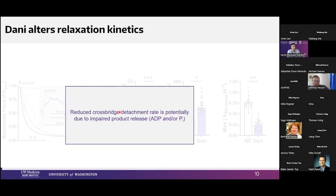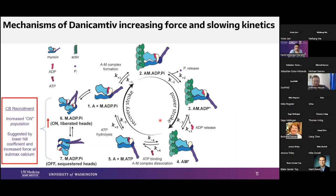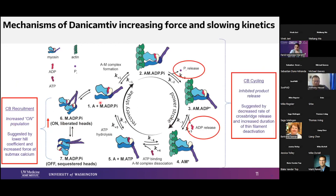We concluded from this that there is reduced cross-bridge attachment. We wanted to investigate whether this is due to product release — ADP and phosphate — especially since phosphate has been shown to be involved in cross-bridge on-state. Going back to the scheme, we think we are affecting recruitment and we're going to investigate the mechanism. On the cross-bridge side, decreased rate of cross-bridge release and prolonged thin filament deactivation suggests we're affecting the cross-bridge cycle. We'll look at phosphate release and ADP release.